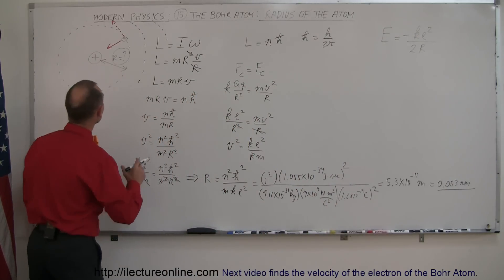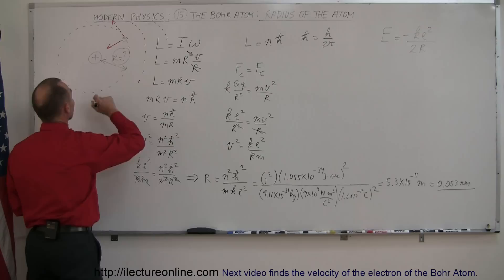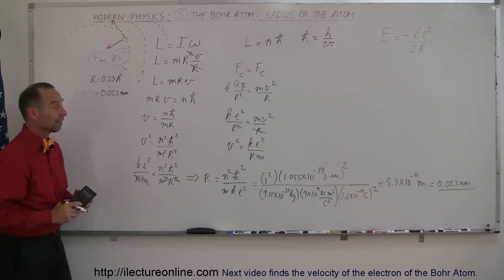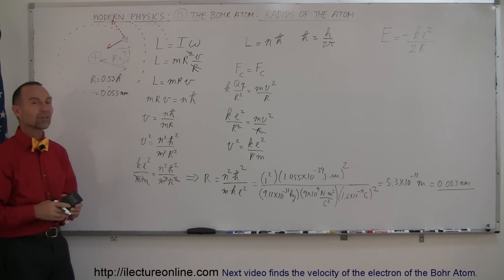So now we can say that r = 0.53 Ångströms or in nanometers it's 0.053 nanometers. That must have been pretty exciting when they were able to figure that out. Now we know how to find the radius of the atom. When we come back we'll deal some more with the radius and energy and some more examples in the future.